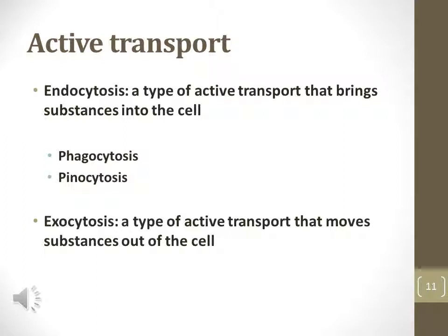Exocytosis is a type of active transport that moves substances out of the cell. Vesicles inside the cell that contain molecules that need to move out of the cell fuse with the plasma membrane. Once the vesicle fuses with the plasma membrane, the molecules contained in that vesicle can leave the cell, and the vesicle becomes a part of the plasma membrane.